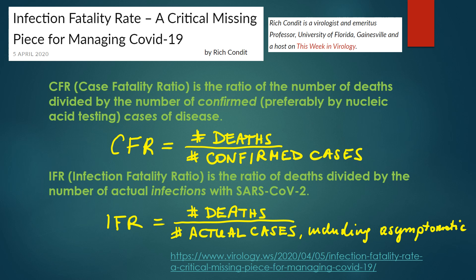To start, we have to define CFR and IFR. CFR, which stands for case fatality ratio, is the ratio of the number of deaths divided by the number of confirmed — preferably by nucleic acid testing — cases of disease. So CFR equals number of deaths divided by number of confirmed cases.